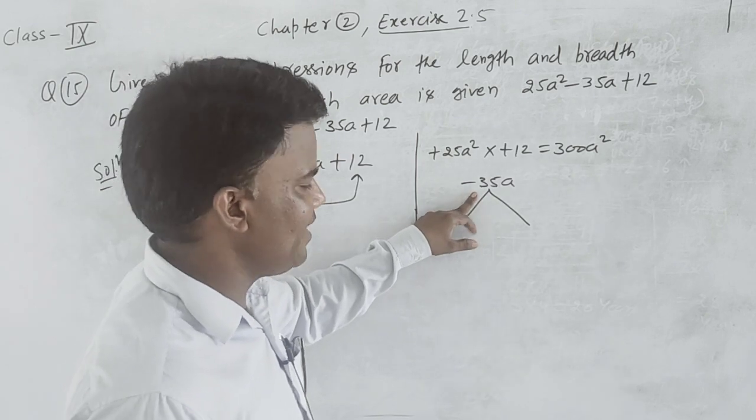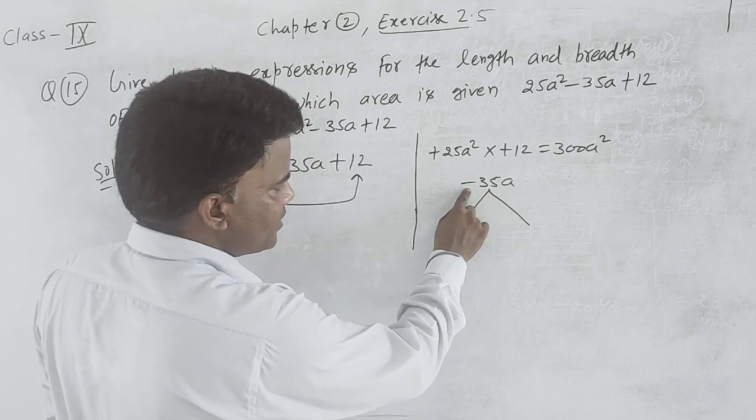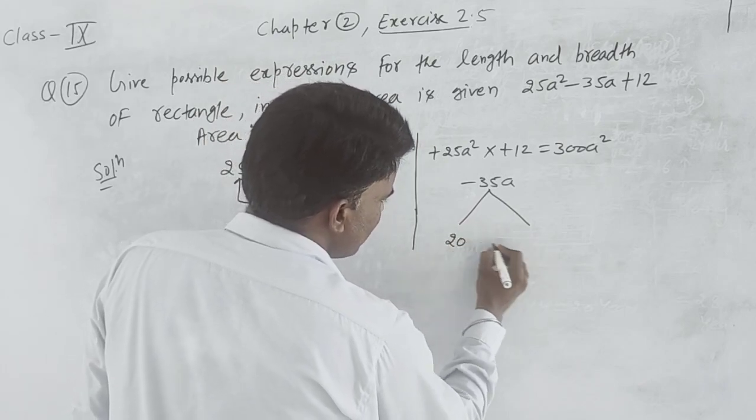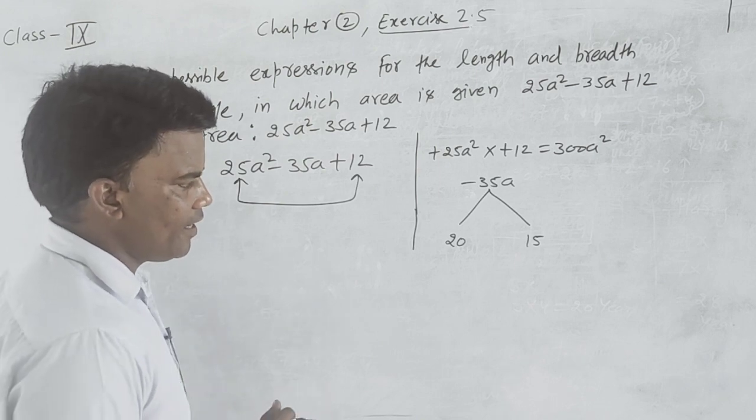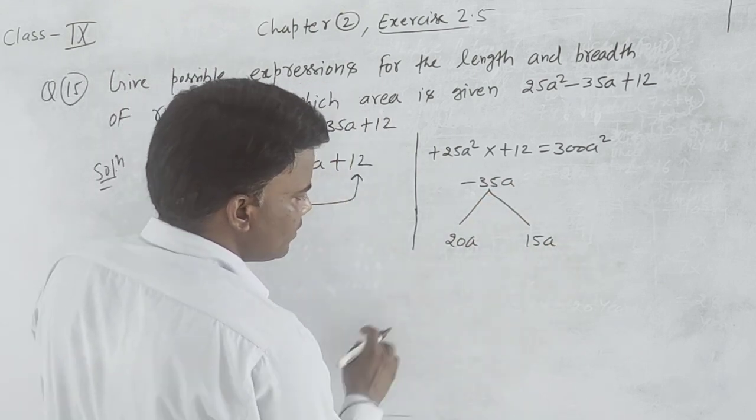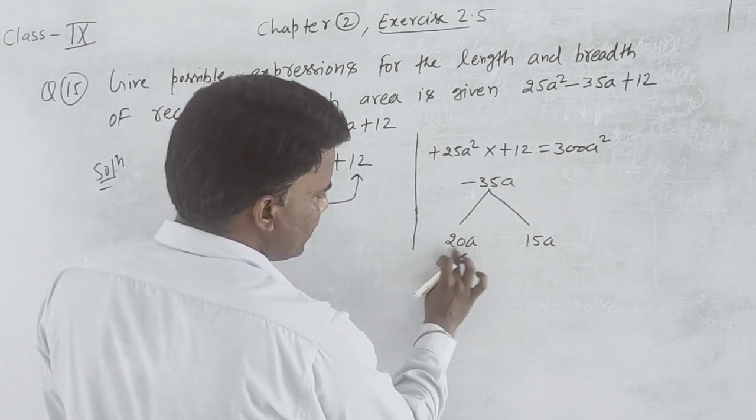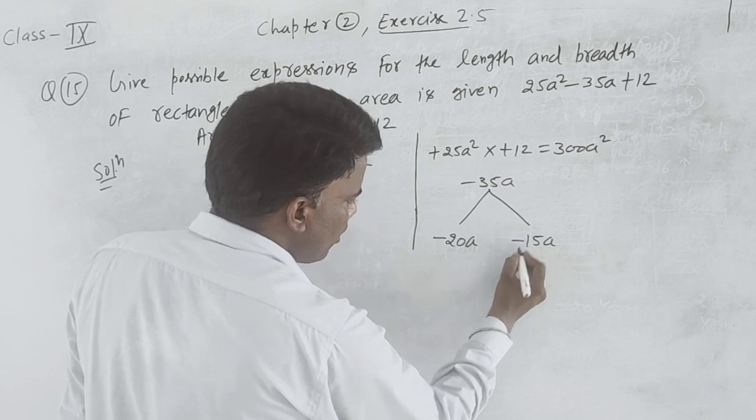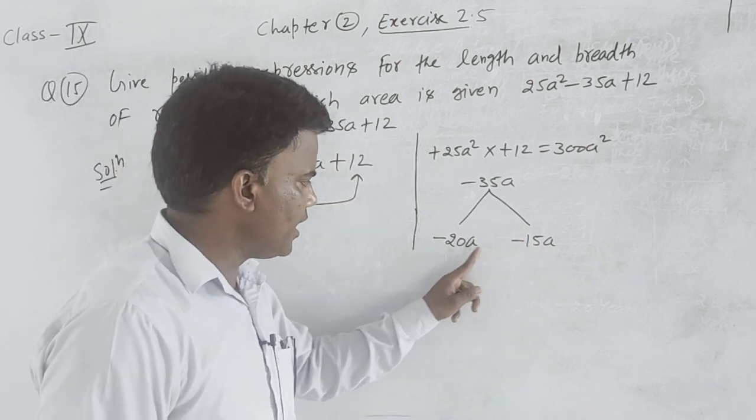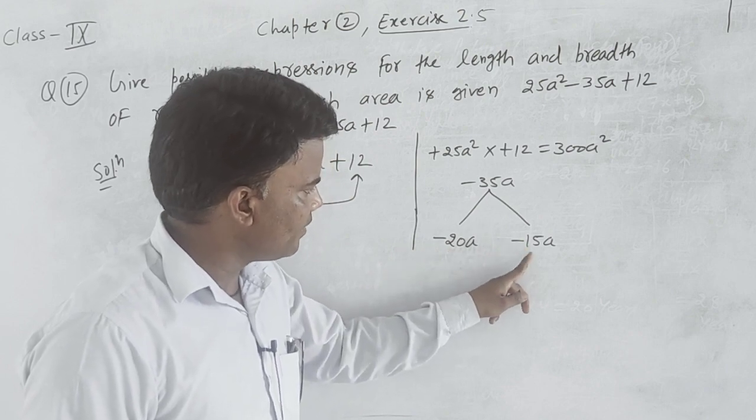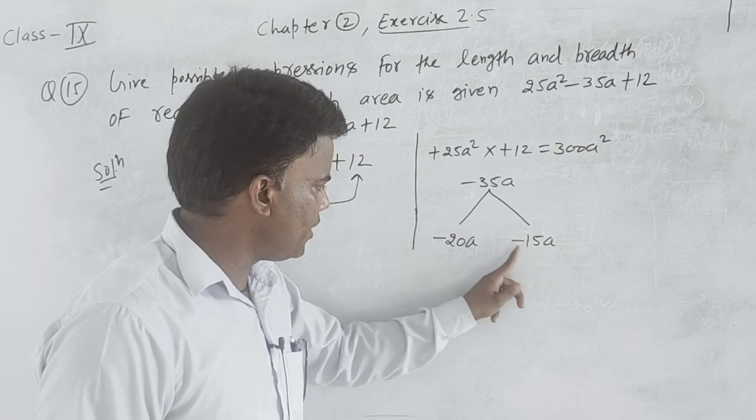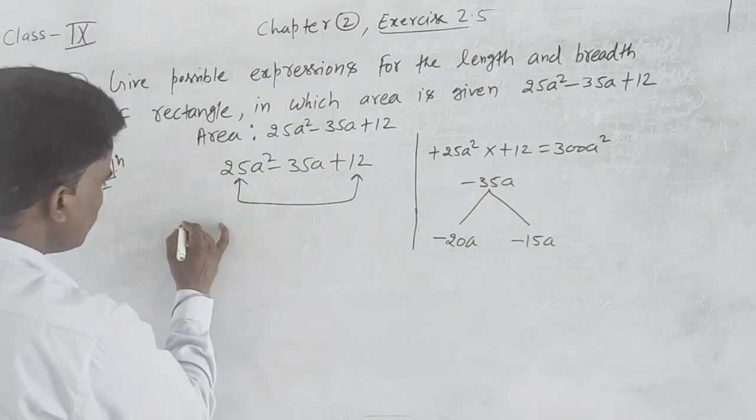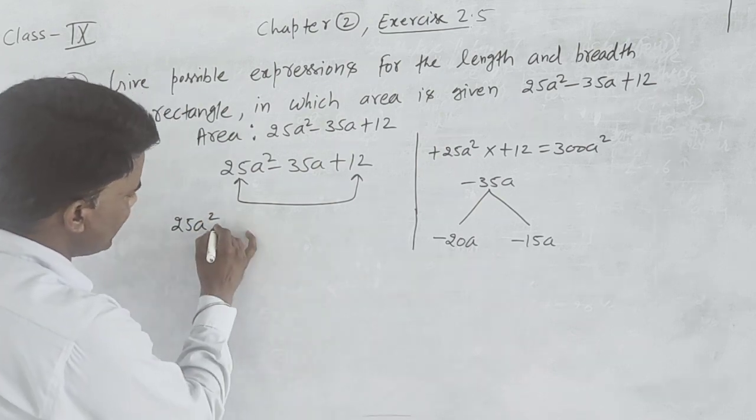We split the middle term into two parts of minus 35a. The two parts are minus 20a and minus 15a. These multiply to give 300a square.